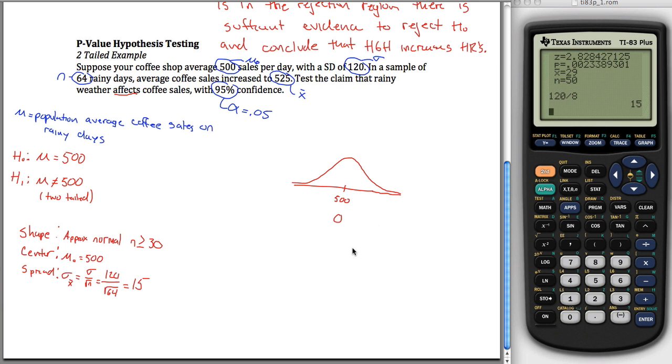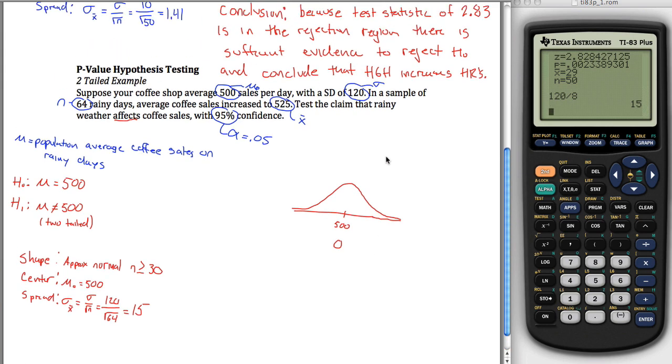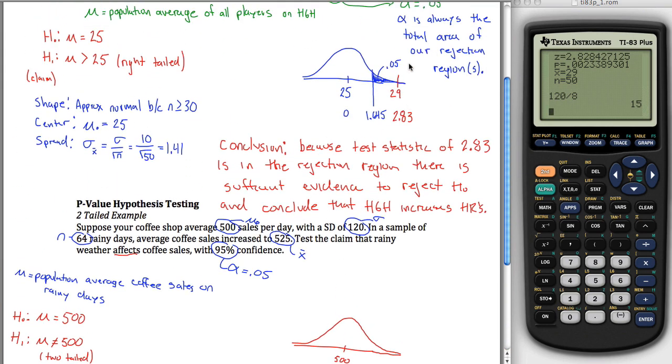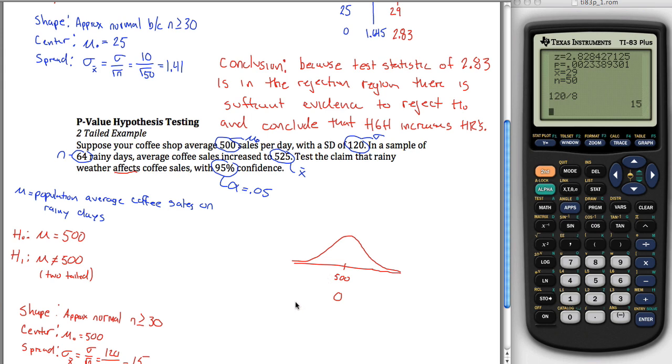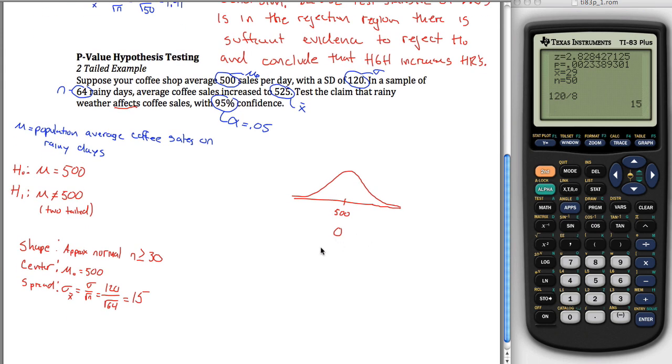What's different, for the first time, we're going to see what's different between the p-value method and the classical method. What's different is that in this step last time, we created these rejection regions in blue here. We looked at alpha and created our rejection region. We're not going to create rejection regions down here. There are no rejection regions. Kind of nice. Cuts out a step. Makes the drawing the conclusion a little bit harder, arguably, but there's no rejection regions. We don't need to figure that out. We don't need to use inverse norm. We don't have to do any of that stuff. P-value is a little bit easier. All we've got to do is figure out where our 525 is.